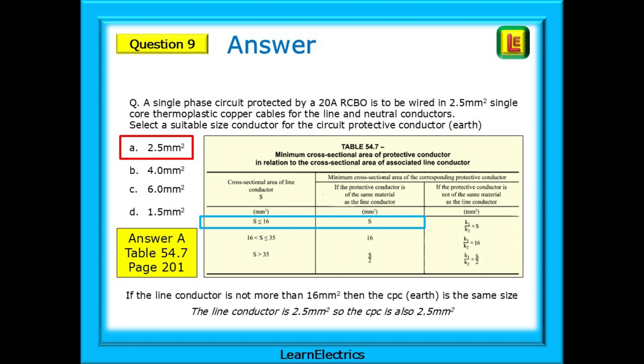Here, the line conductor is 2.5 square millimetre, so the CPC is also 2.5 square millimetres. How to find table 54.7 from the index is fairly straightforward. The question uses the word select. Turn to page 600 of the index. This is protective conductors, and just a few lines down on the left-hand side are the words selection and direction, section 543, from where table 54.7 is found on page 201.